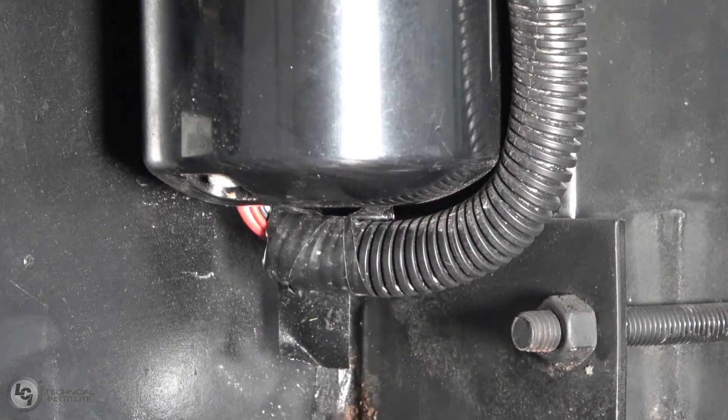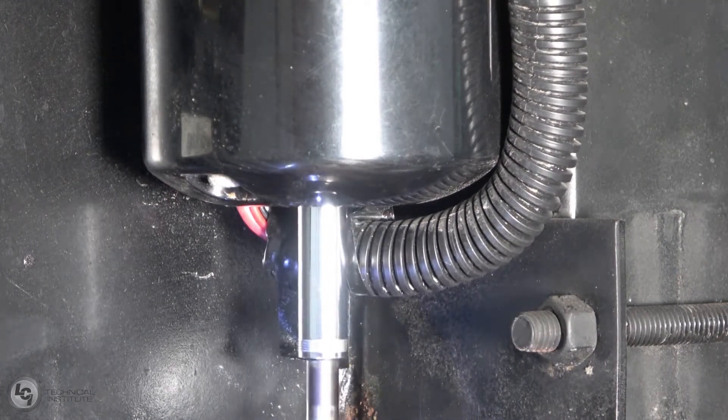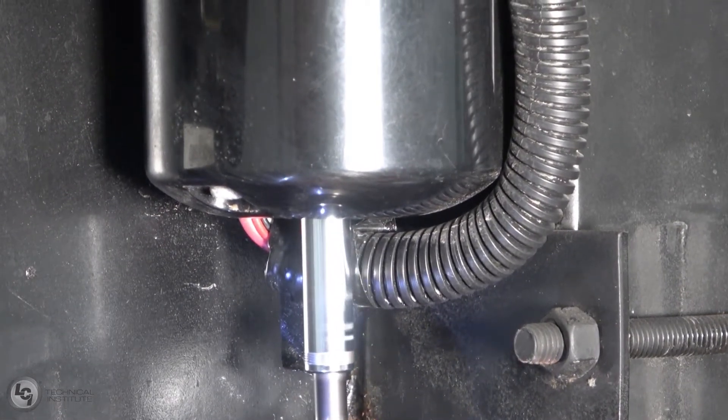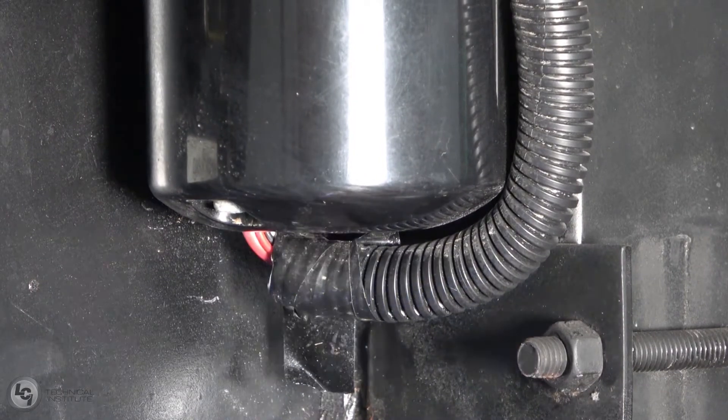The first is to remove the rubber plug at the bottom of the motor and, using a 9-16th socket and an electric drill, manually run the jack up or down. Remember to replace the plug when done.